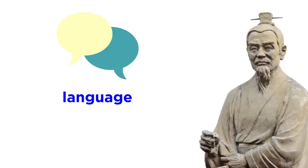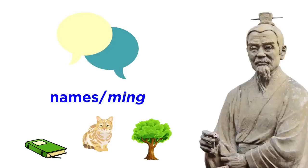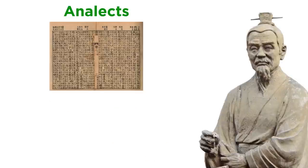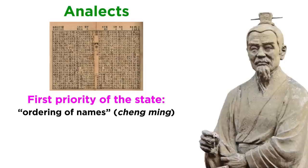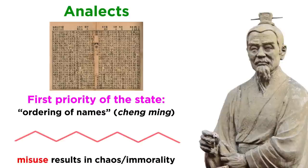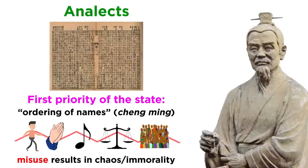As we already saw, Confucius and his predecessors centered their philosophical perspectives around language, or more specifically on names, or Ming, and their relationships with all the things they designate. In his Analects, when asked what his first priority would be when administrating the state, he said it would be to focus on the proper use of names, or ordering of names — Zheng Ming — as their misuse would generate an incongruity between actions, rituals, songs, law, and the people, and thus result in chaos and immorality. However, Confucius never delved further into proper linguistic analysis.